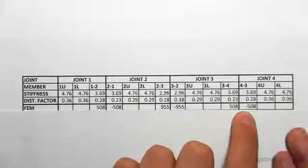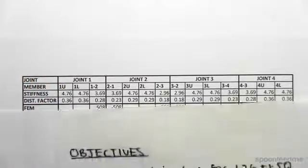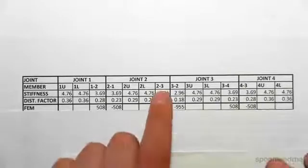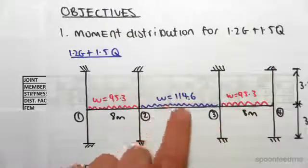All right, the next thing we want to do is find the moment, the fixed end moments at 2 to 3 and 3 to 2. So from 2 to 3, from 3 to 2 is along this span here.